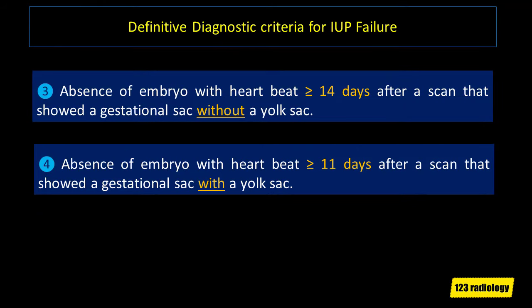These are the 3rd and 4th definitive criteria for early pregnancy failure in interval studies. The 3rd criterion is absence of embryo with heartbeat 14 days or greater after a scan that showed a gestational sac without a yolk sac. The 4th criterion is absence of embryo with heartbeat 11 days or greater after a scan that showed a gestational sac with a yolk sac.